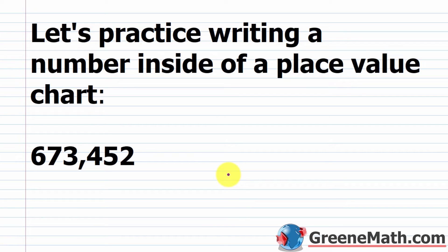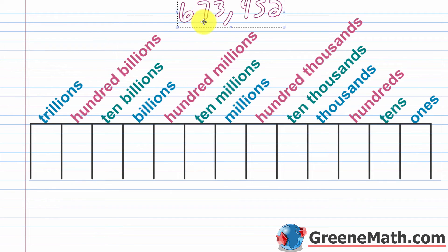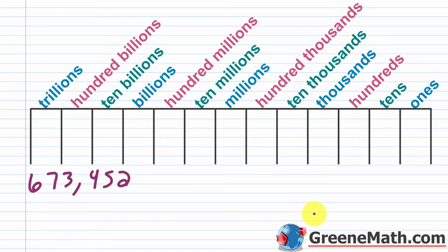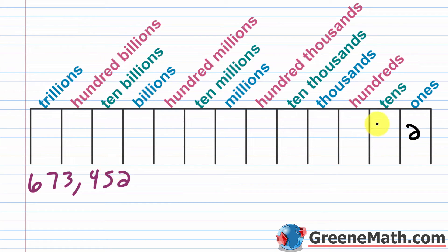Let's practice writing a number in a place value chart. Take 673,452. I'd advise getting a piece of paper and trying this yourself. Starting with the rightmost digit, the 2, put it in the ones place. Working left: the 5 goes into tens, the 4 into hundreds, the 3 into thousands, the 7 into ten thousands, and the 6 into hundred thousands.